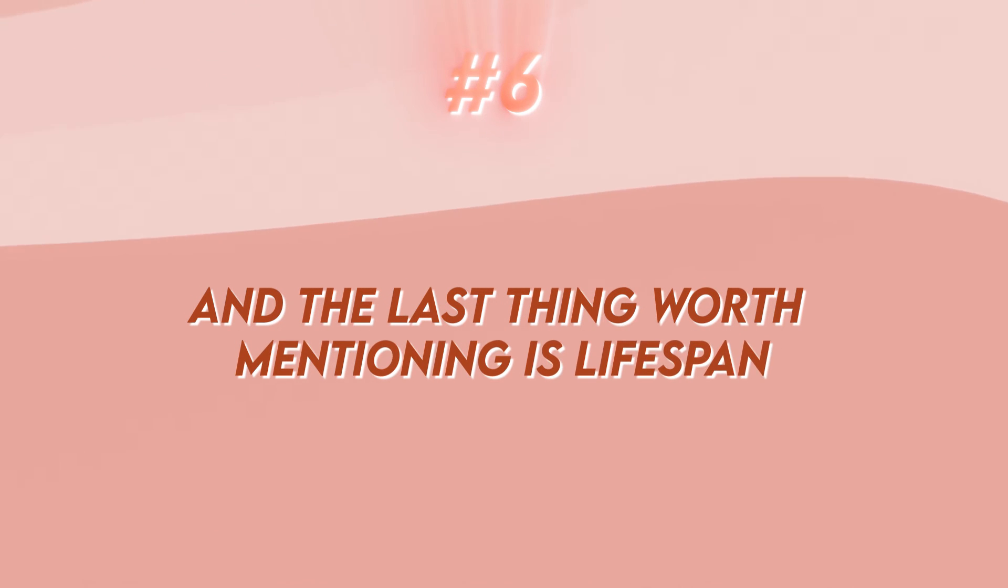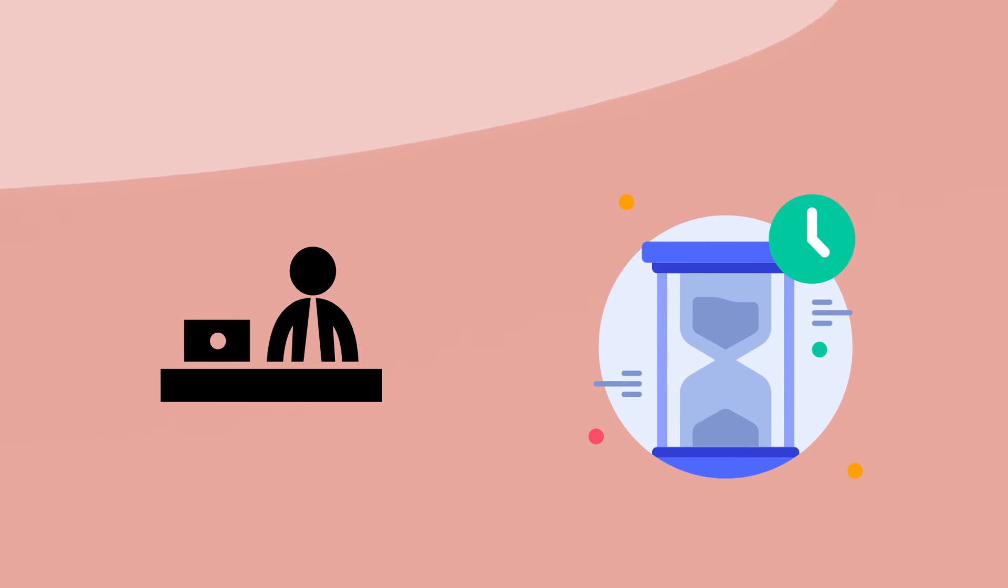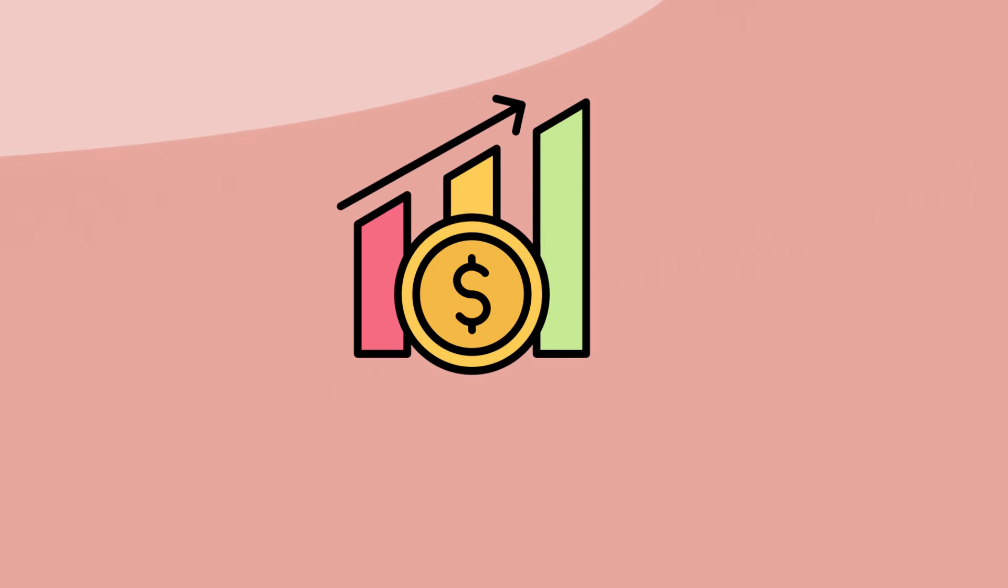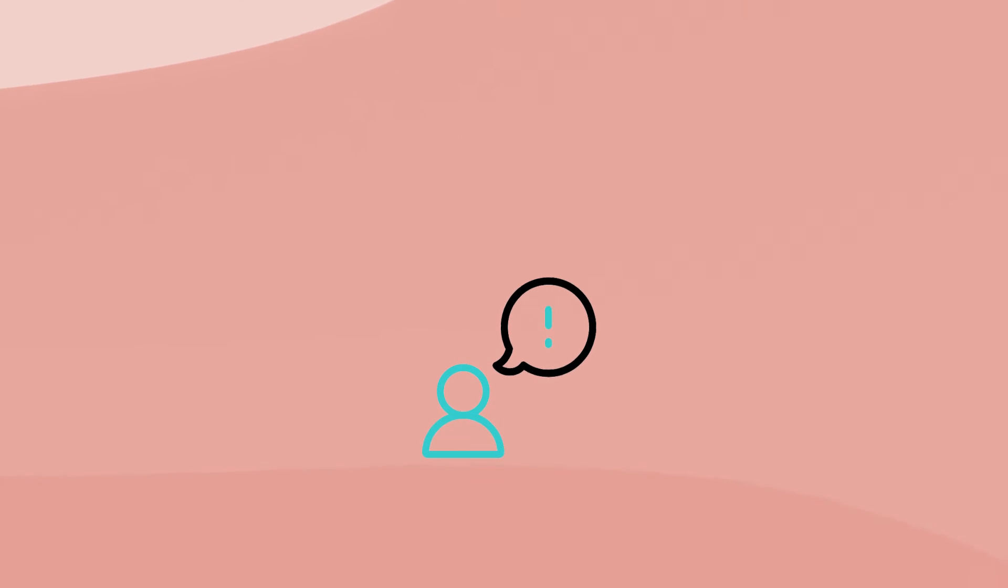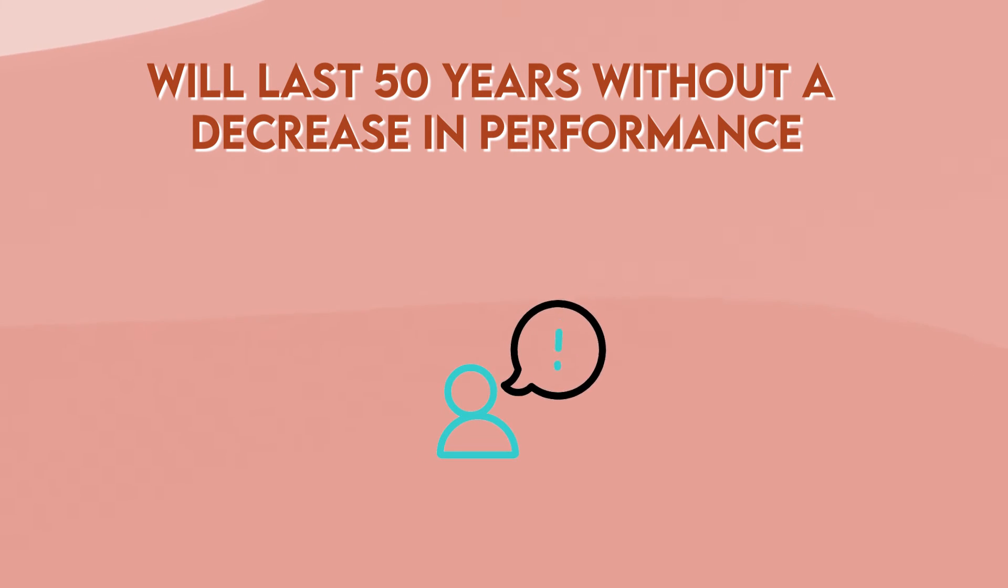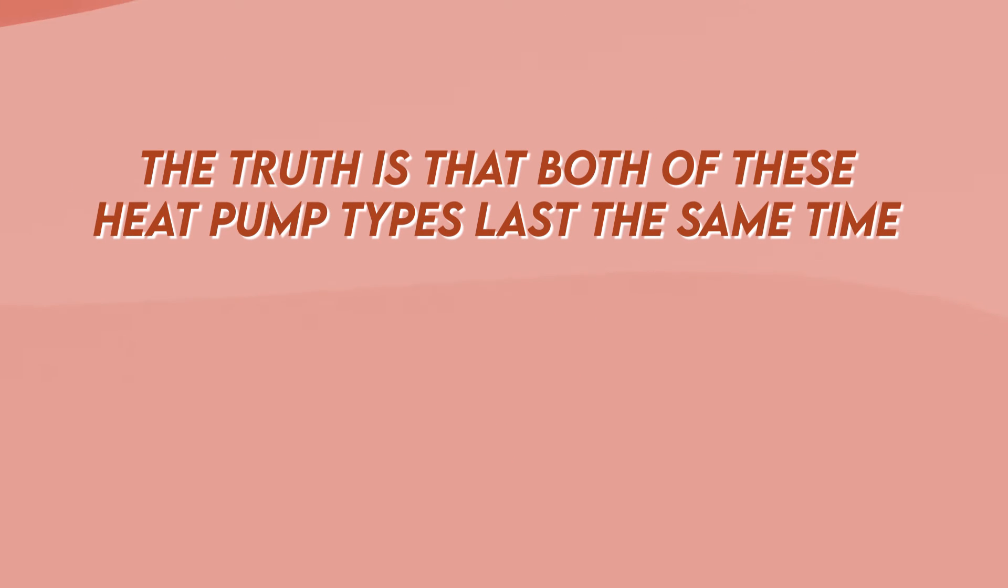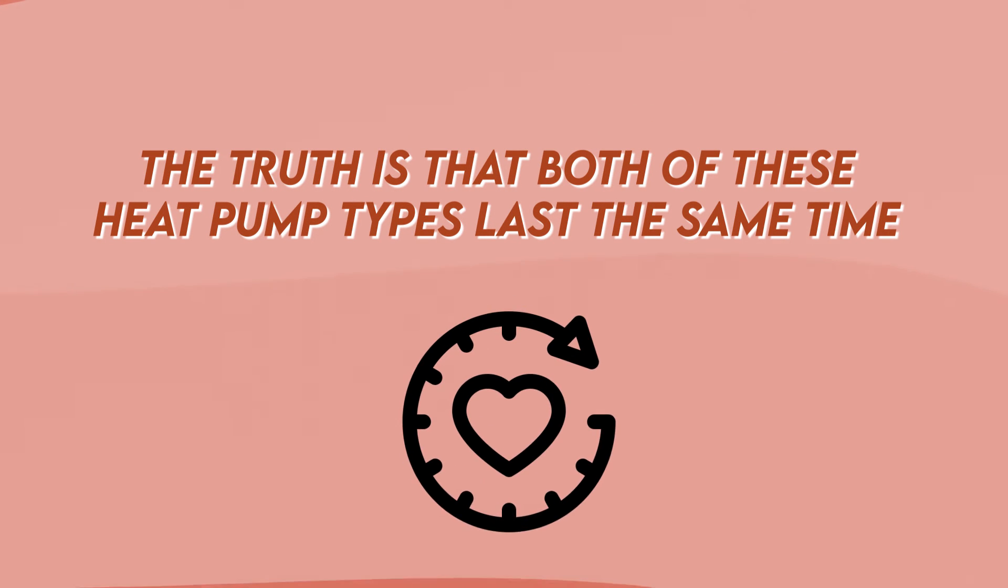Number six: The last thing worth mentioning is lifespan. You'll hear a lot of times from shady salesmen that one system has a longer lifespan than the other. To be honest, you might often hear unrealistic numbers. Don't be fooled that your system will last 50 years without a decrease in performance. The truth is that both heat pump types last the same time, around 20 years on average.